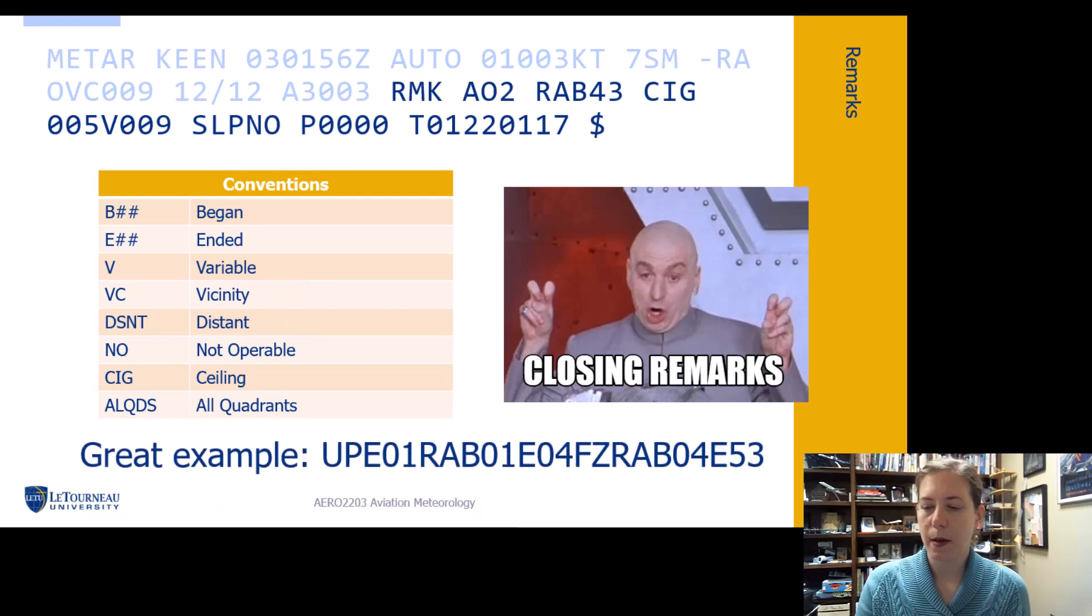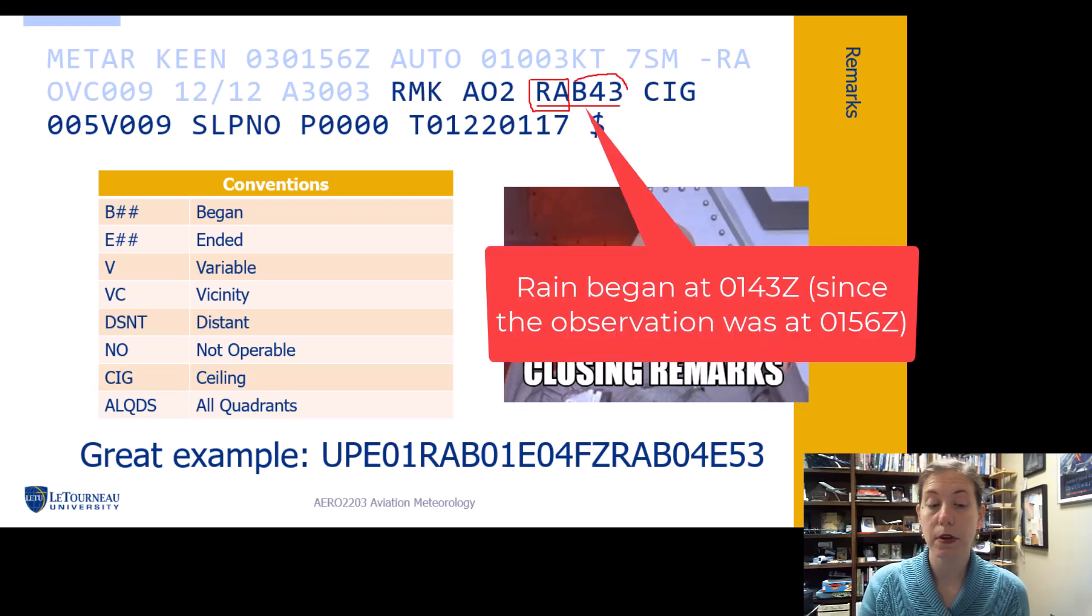Here's a great example that I've just pulled up. Let's start with something simple though. In the main body of this METAR we have RA, so we got to break that up. Rain goes back to our precipitation list, began at 43 minutes past the hour. So rain began 43 minutes past the hour.